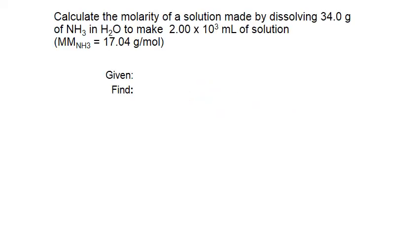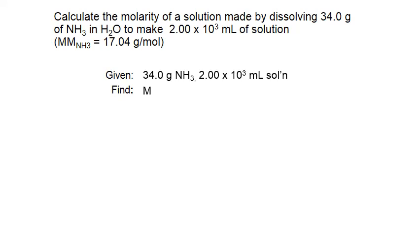Let's do a sample calculation of molarity. We'll look at a solution made by dissolving 34 grams of ammonia (NH3) in water, which is our solvent, to make 2.00 times 10 to the third milliliters of solution — that's the same as 2,000 milliliters. We start by figuring out what we're given and what we're trying to find: the mass of our solute ammonia and the total volume of the solution.